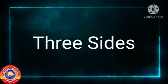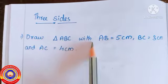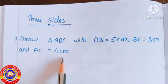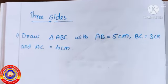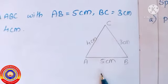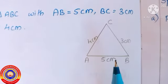Draw triangle ABC with AB equal to 5 centimeters, BC equal to 3 centimeters, and AC equal to 4 centimeters. First draw a rough figure for reference. Now using this we can draw the triangle.